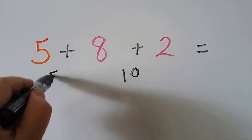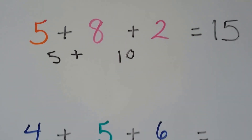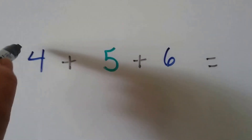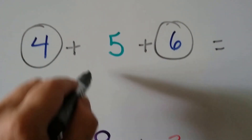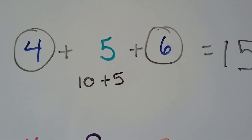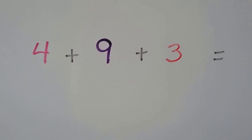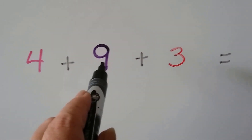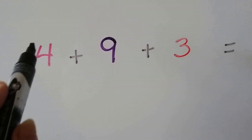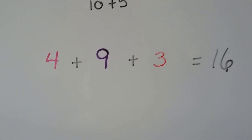Do you see some compatible numbers here? The eight and the two — that means we have a ten, and we add a five: five plus ten is fifteen. How about here? The four and the six make a ten, then we just add that green five and we have fifteen. How about here? Not really compatible numbers, but we can start with the big number nine and count on: nine, ten, eleven, twelve, thirteen, fourteen, fifteen, sixteen.